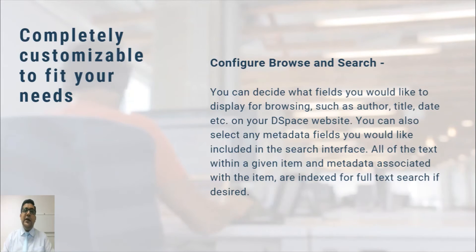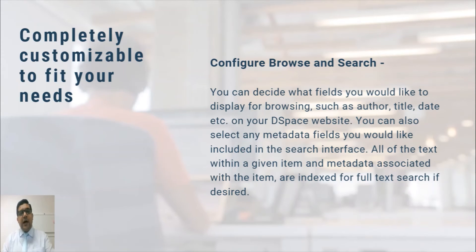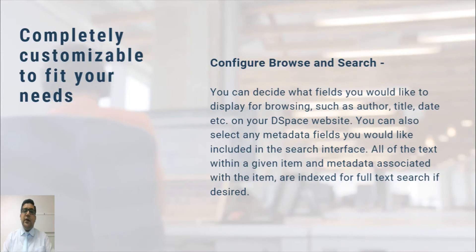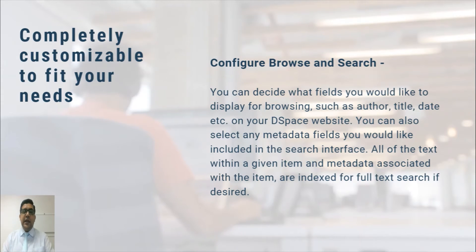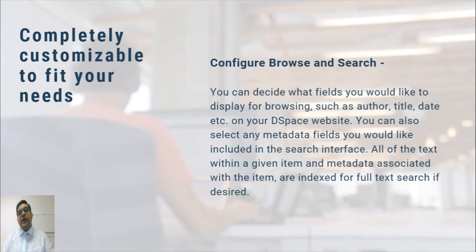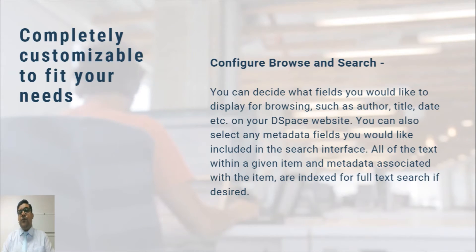You can also configure browse and search. You can decide what fields you would like to display for browsing — such as author, title, date, etc. — on your DSpace website. You can also select any metadata field to include in the search interface. All of the text within a given item and the metadata associated with the item are indexed for full-text search if desired.